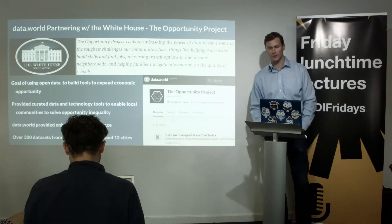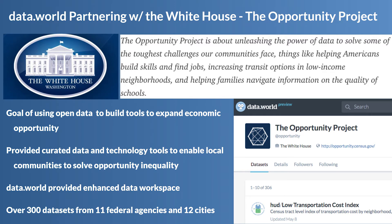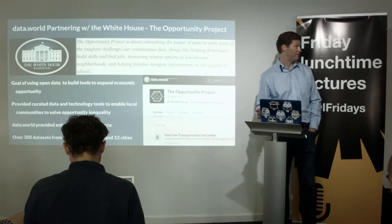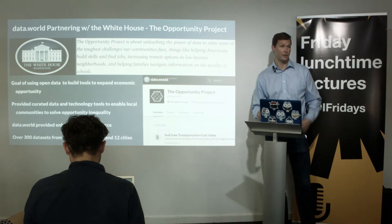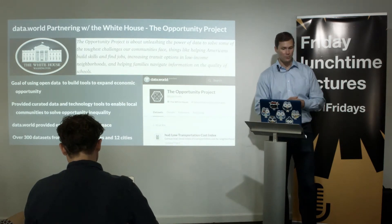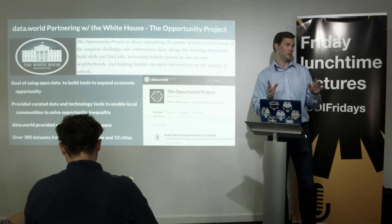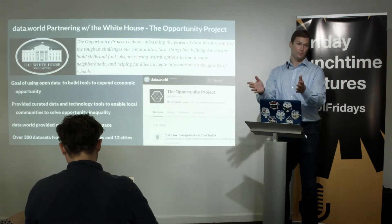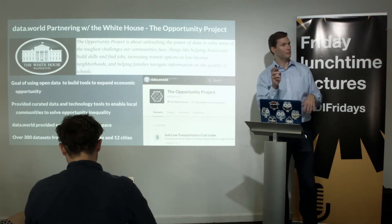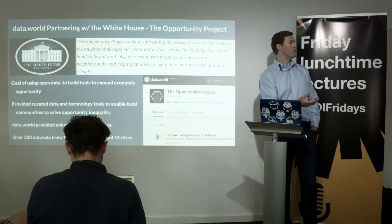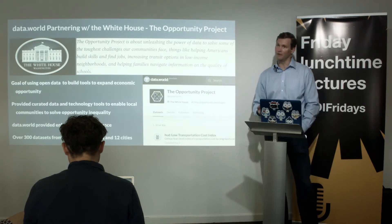Last year, the White House ran something called the Opportunity Project. The concept: if you gave the data and great tools to citizens, they would solve a lot of their own problems. They put out over 300 curated datasets from 11 federal agencies and 12 cities — because people want to localize problem-solving. They also put out specific problem statements rather than just saying 'here's data, go do something with it' — they actually provided hypotheses and enabled people with data and tools to try to solve problems locally.